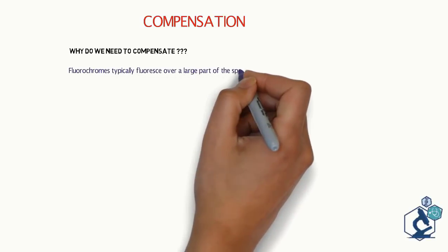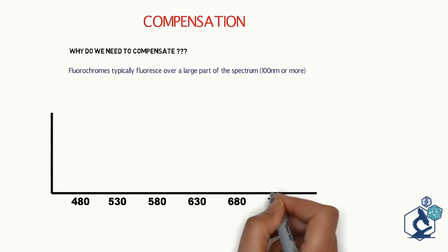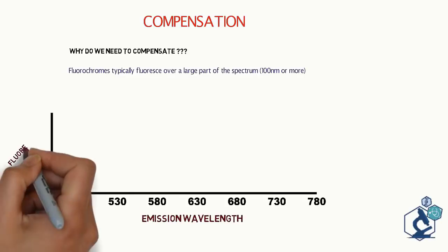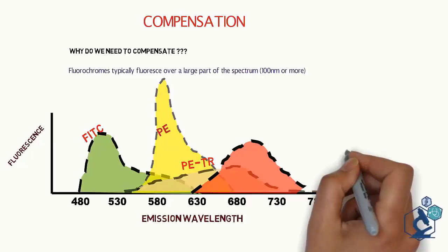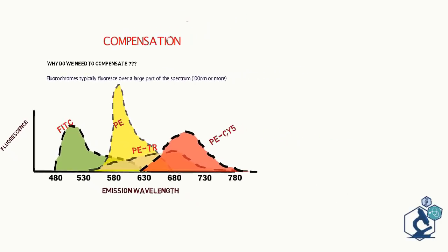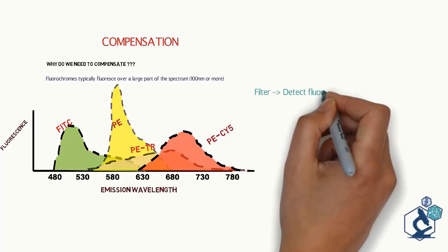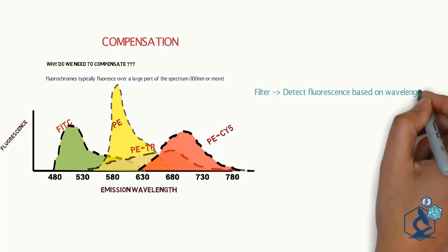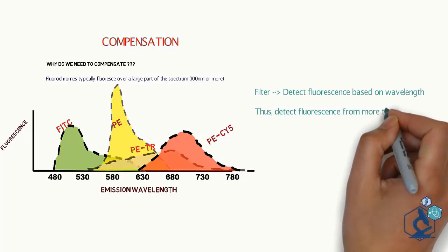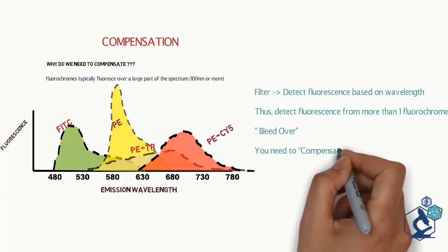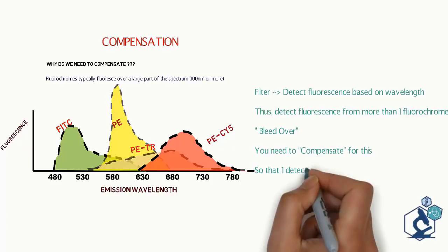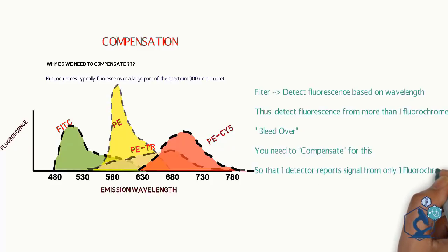Compensation. Fluorochromes typically fluoresce over a large part of spectrum, 100 nm or more. This graph shows emission wavelength of few commonly used fluorochromes. As we can see that there is an overlap among these emission wavelengths. Depending on filter arrangement, a detector which detects light on the basis of wavelength may hence detect some fluorescence from more than one fluorochromes, which is referred to as bleed over. We need to compensate for this bleed over so that one detector reports signal from only one fluorochrome.